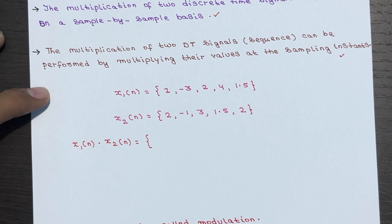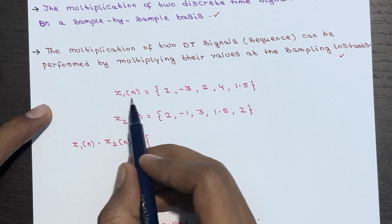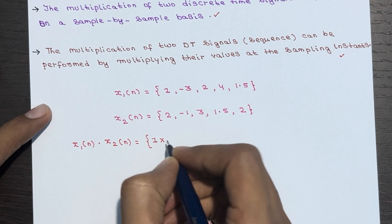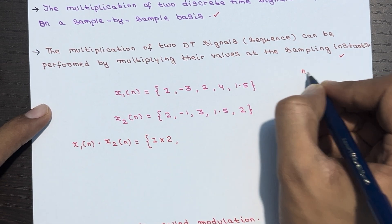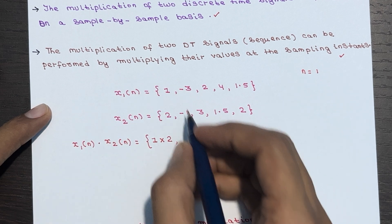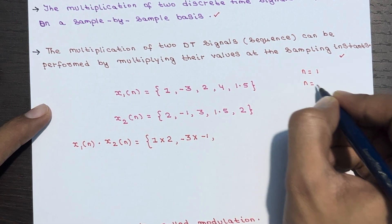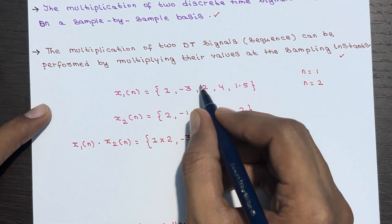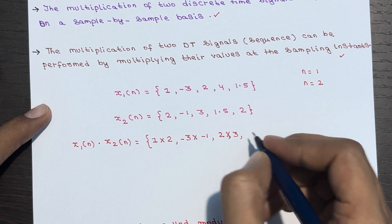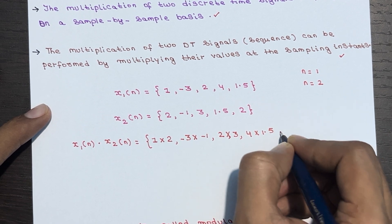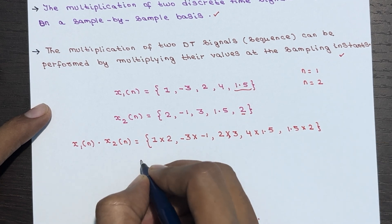We do this sample by sample. At n=0, the value of X1(n) is 1 and the value of X2(n) is 2, so we get 1 × 2. At n=1, X1(n) is -3 and X2(n) is -1. At n=2, X1(n) is 2 and X2(n) is 3, giving 2 × 3. Then 4 × 1.5, and finally 1.5 × 2.